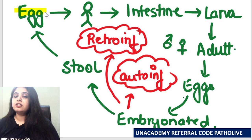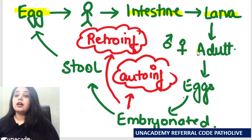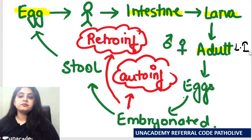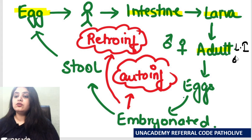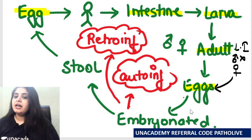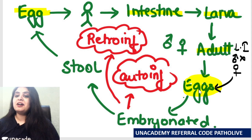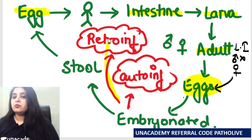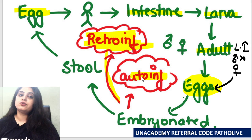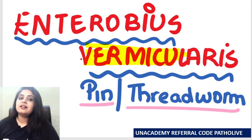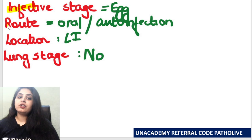A quick recap: we consume embryonated eggs via contaminated food and water. They go into the small intestine, larva comes out, adults form and sit in the large intestine in the cecum. Fertilization occurs, the male dies, the female goes to the perianal region and lays eggs. Eggs pass out into the stool and back to humans — that's the usual cycle. Additionally, eggs may release larva in the perianal region causing retro infection, or intense pruritus leading to hand and nail contamination causes auto infection.